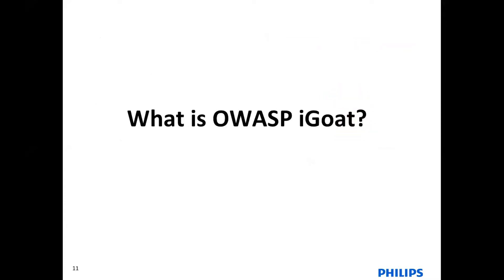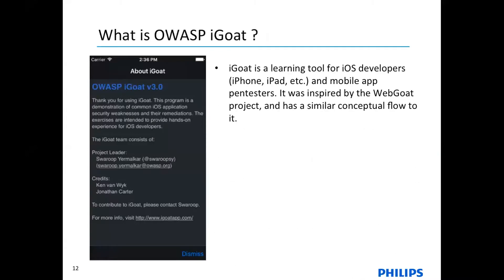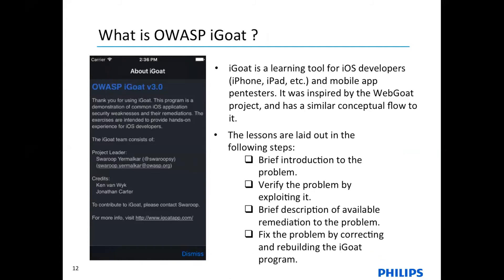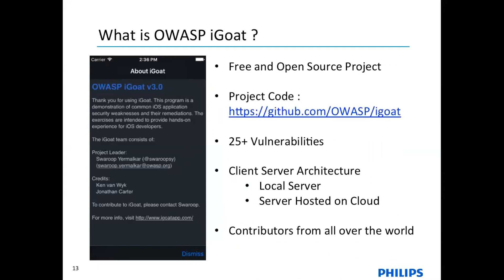OWASP iGoat is a learning tool and platform for iOS developers and mobile app pentesters. It was inspired by the WebGoat project and has a similar conceptual flow. Lessons are laid out in steps: a brief introduction to the problem, verifying the problem by exploiting the vulnerability, a description of available remediation, and fixing the problem by correcting and rebuilding the code. It's a free and open source project. You can find the code at github.com/OWASP/iGoat. It currently has more than 25 vulnerabilities or challenges and has a client-server architecture with one local server and one server on the cloud.